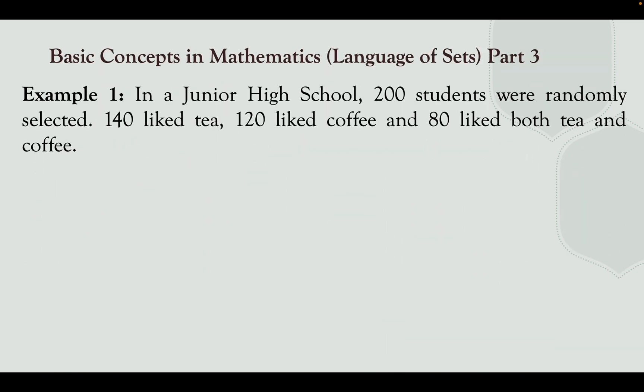In example number one, we will try to use the step-by-step approach on how to solve problems involving set operations. In a junior high school, 200 students were randomly selected. 140 liked tea, 120 liked coffee, and 80 liked both tea and coffee.